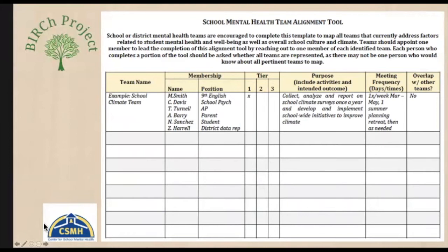The next tool is the School Mental Health Team Alignment Tool. It's a worksheet to help schools identify all the teams in their building that address factors related to school mental health, well-being, school culture, and climate. It's a nice visual to see the membership of the team, what tier they're addressing, what purpose they serve, and their meeting frequency. It also helps identify what activities are missing and what's being addressed. By completing this worksheet you can see if there are teams that already exist doing tasks related to what the school mental health screening team will do.